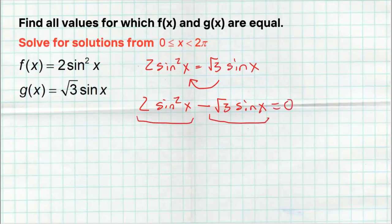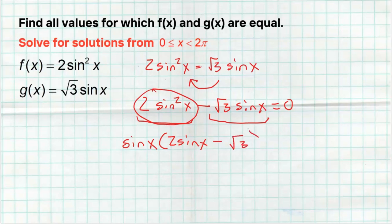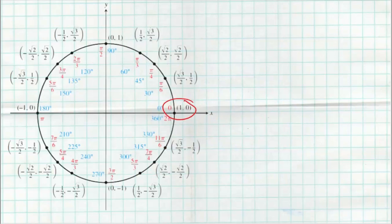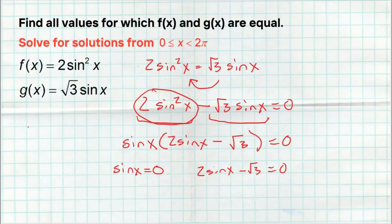We have two terms. What do those two terms have in common? We can factor out the GCF — the greatest common factor — which is sine of x. Dividing it from the first term gives two sine of x; dividing from the back term gives negative radical three. Using the zero product property: sine of x equals zero, or two sine of x minus radical three equals zero. Sine equals zero at zero and pi — two answers there.